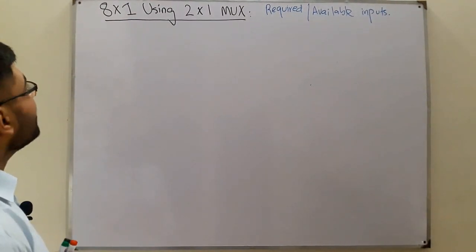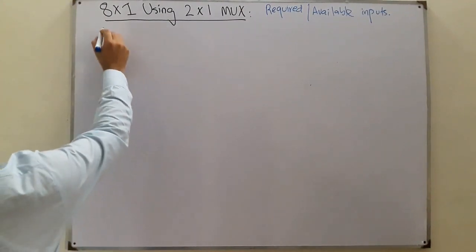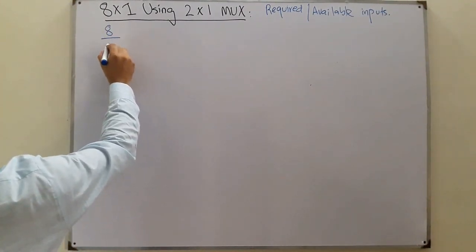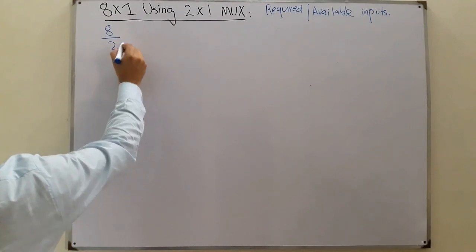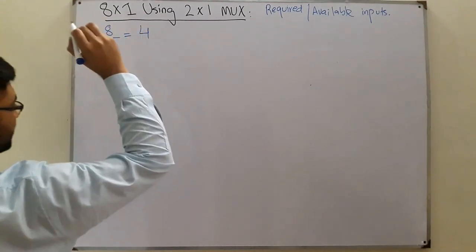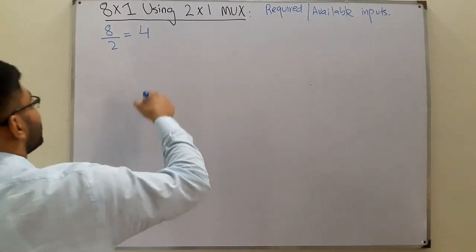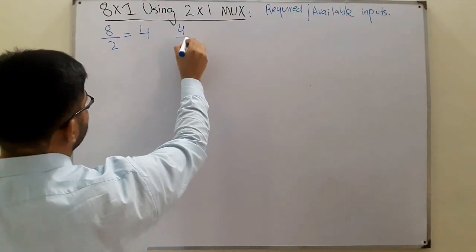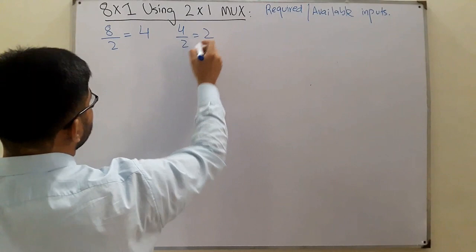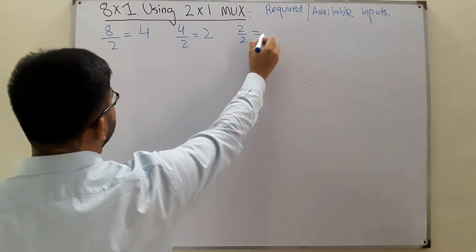The required are 8 and the available are 2, so 8 divided by 2 is 4. Then 4 is again divided by 2, which gives 2. And again 2 is divided by 2 to get 1.